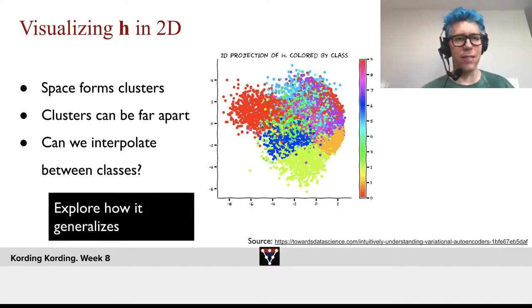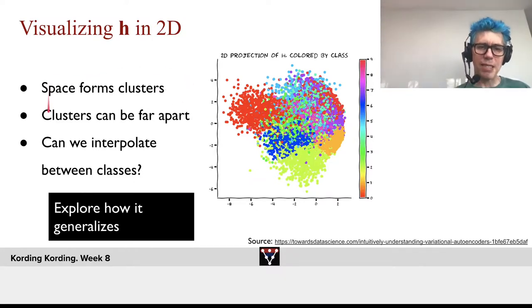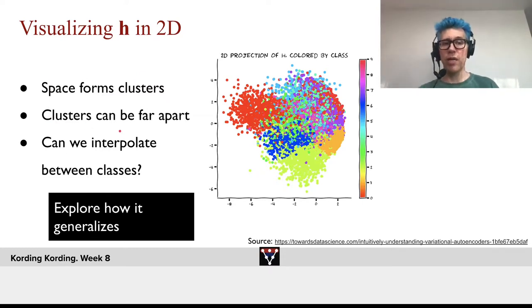Now, let's look at that. So, we can start and visualize things in two dimensions. You can say, if we look at the different characters, they will, in some really meaningful space, hopefully, have clusters. So, the space should form clusters. The clusters might be far away from one another.